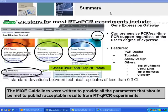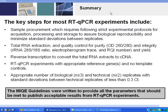In summary, the key steps for most reverse transcription quantitative PCR experiments include sample procurement — which requires following strict experimental protocols for acquisition, processing, and storage of samples to assure good biological reproducibility and minimize the standard deviations between replicates.